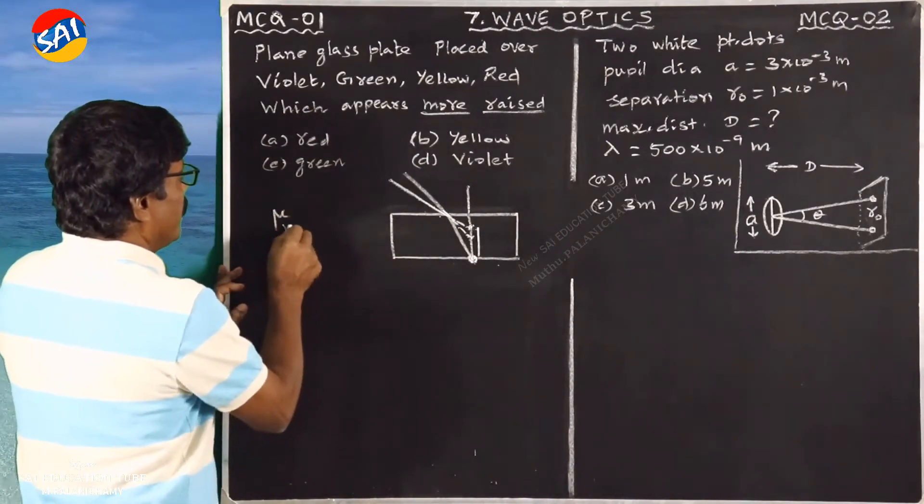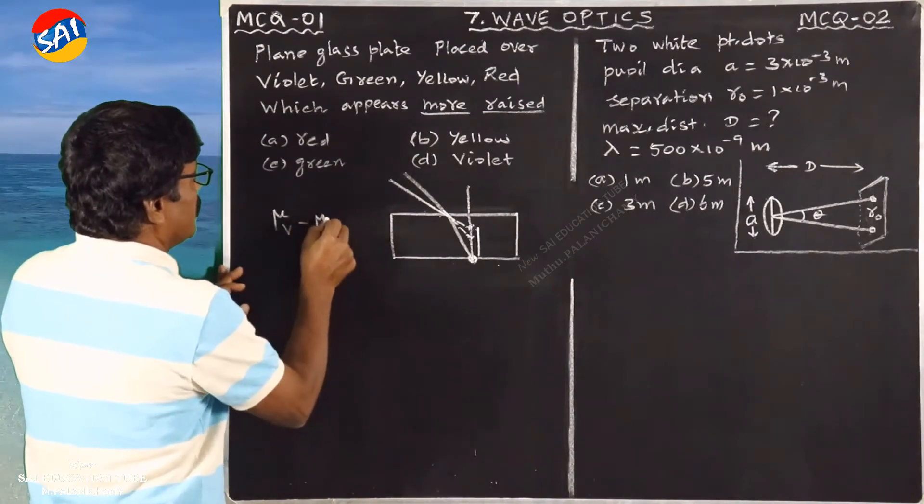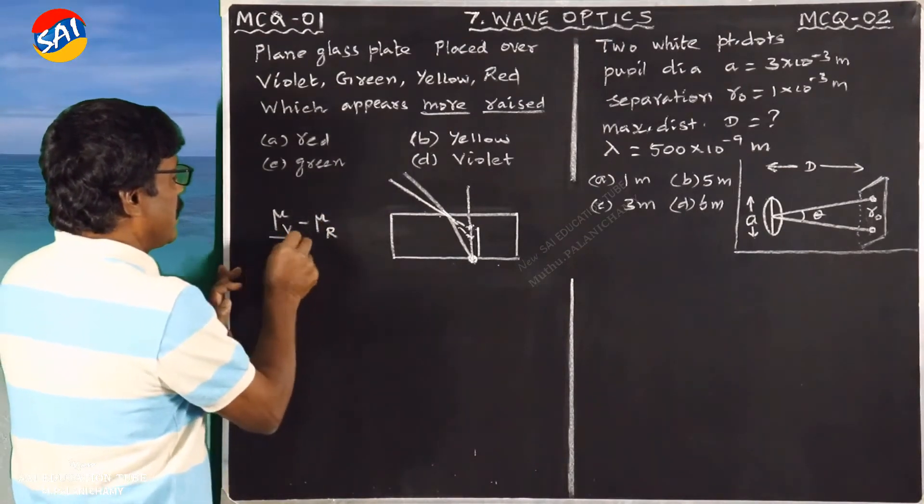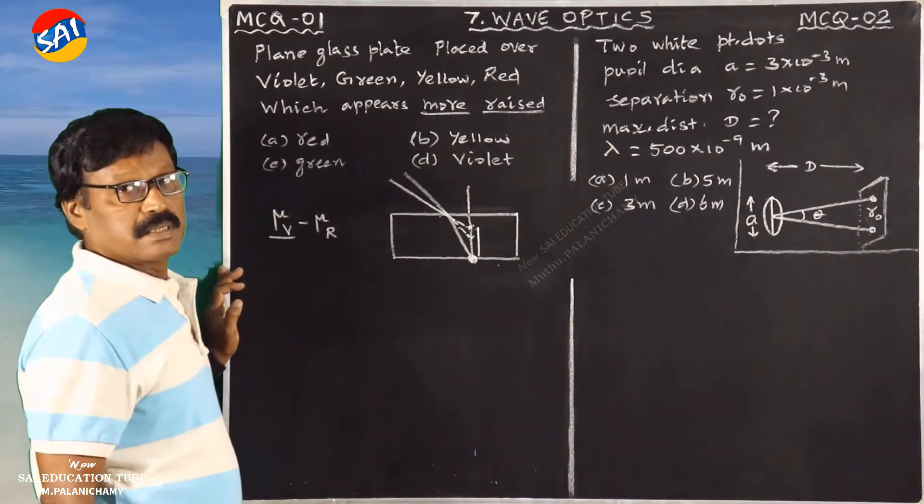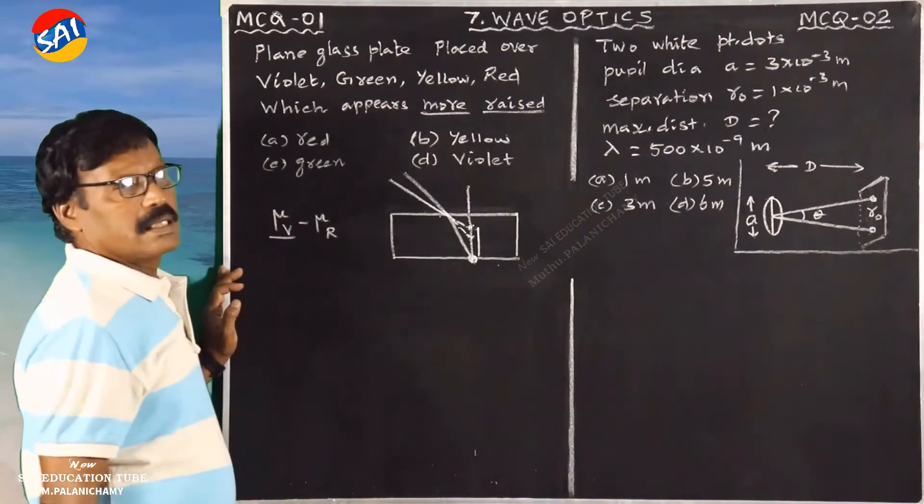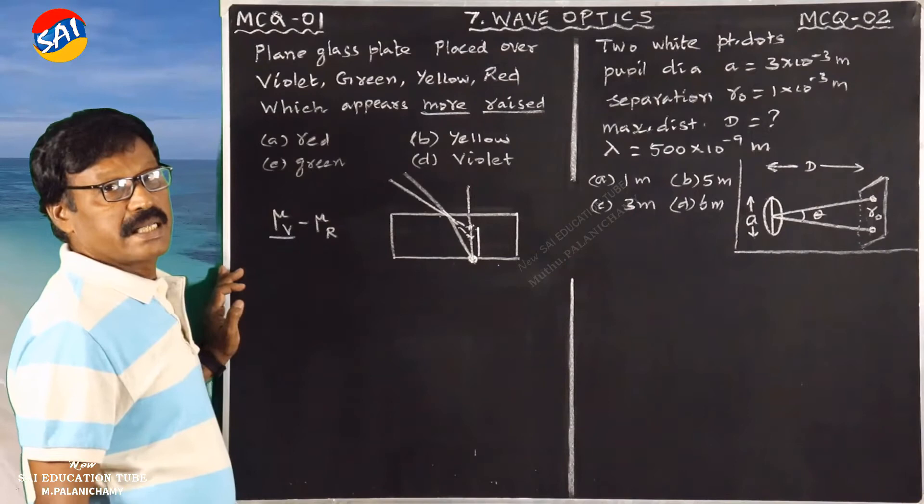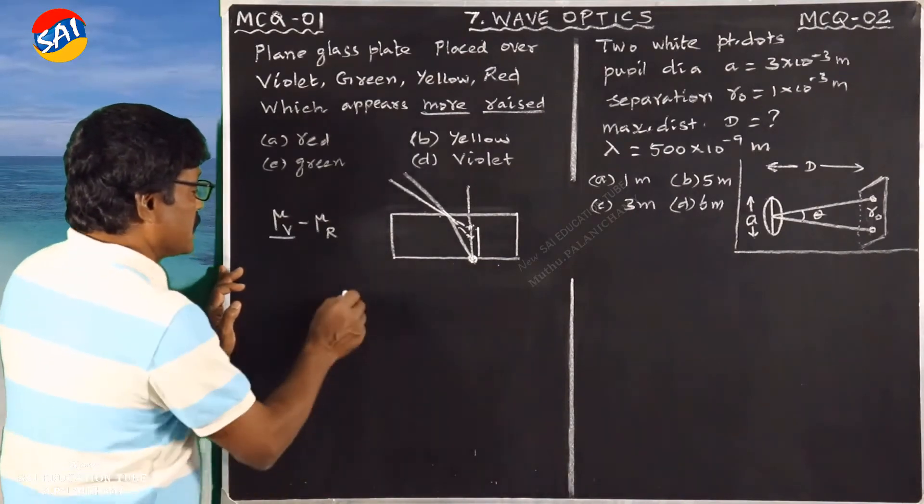Mu v minus Mu r. We know that mu v is higher - violet has the highest refractive index, which is the maximum.